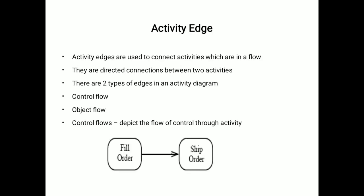Next is activity edge. Activity edges are used to connect activities which are in a flow. They are directed connections between two activities. There are two types of edges in an activity diagram: control flow and object flow. Control flow shows or depicts the flow of control through activity. Here, fill order and then next activity is ship order. So this is the control flow.